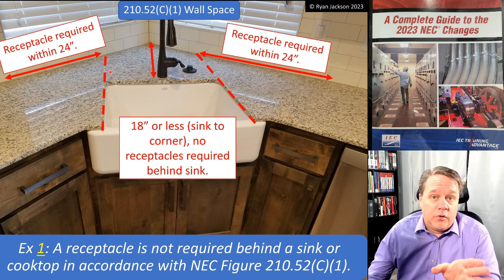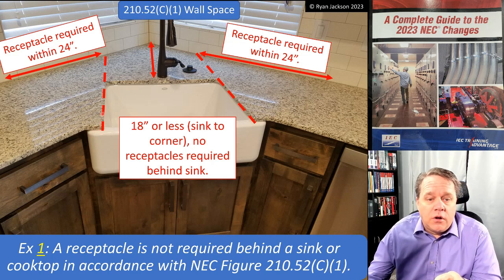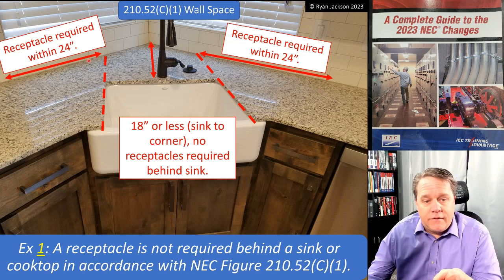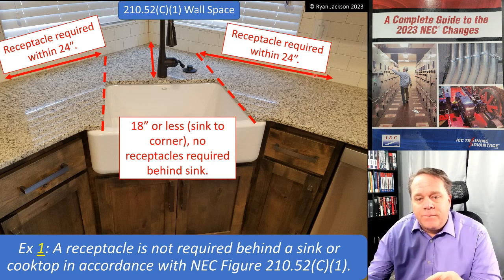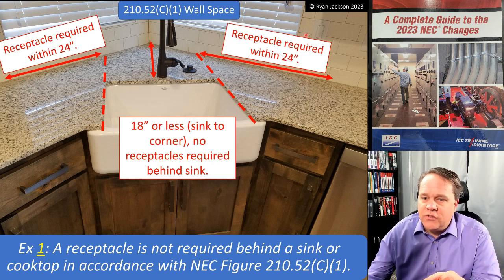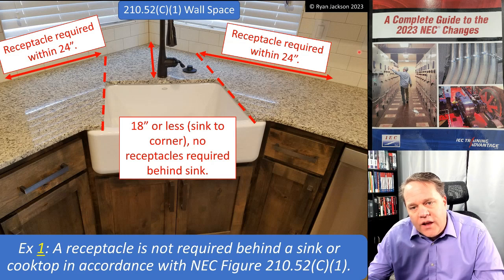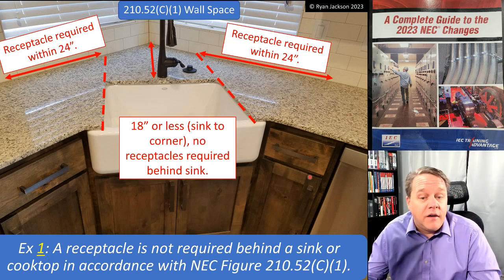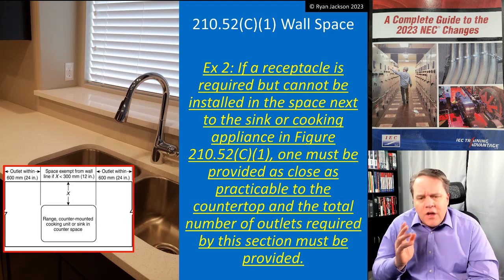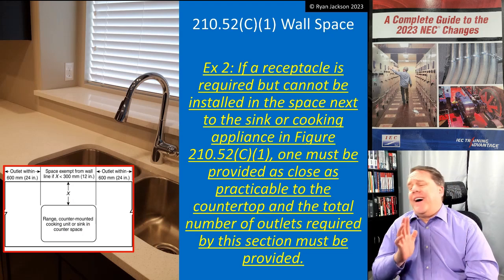A common mistake: when measuring for required receptacle placement around a sink, you need to draw an imaginary line along the sink and pull your tape back from there — a receptacle must be within two feet of that line. That often gets missed. Over on the right side, where the switch is, a receptacle nearby appears to be close enough.